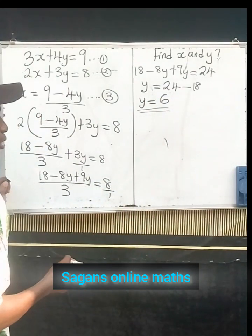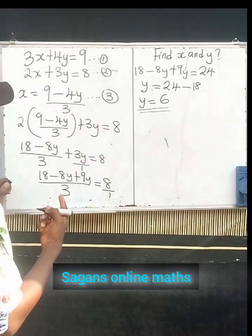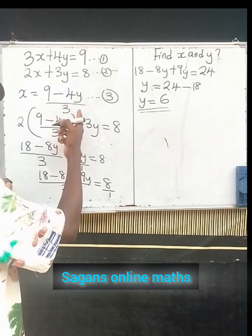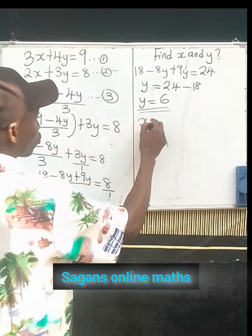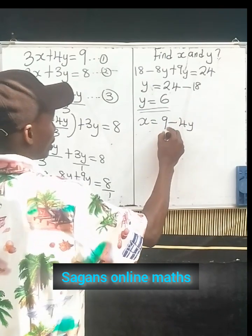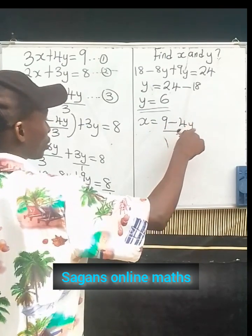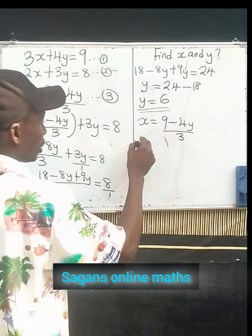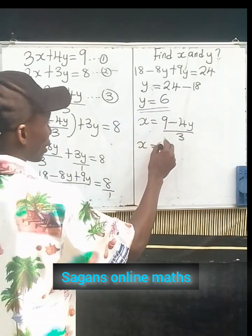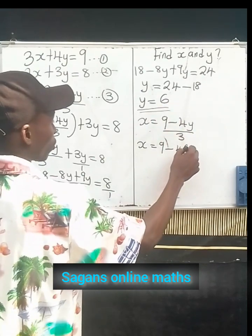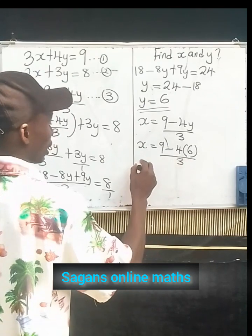Now let's find x. Since we're getting that y is equals to 6, now recall that from equation 3, x equals to (9 - 4y) divided by 3. We are getting the value of y which is 6, so we can substitute the value of y into this to have the value of x.